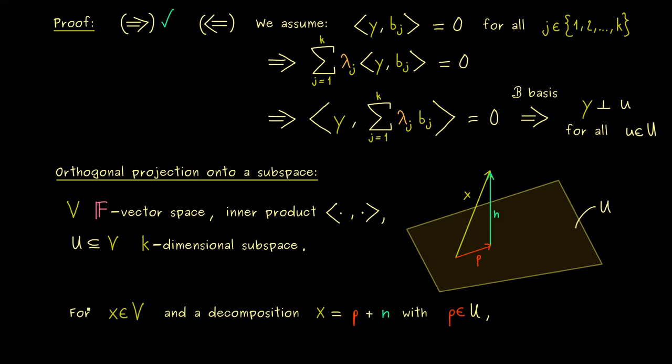We still take a general vector x in V and then we search for such a decomposition, where p lies in U and n is orthogonal to the subspace. And to make that clear, I now write that n is in the orthogonal complement of U.